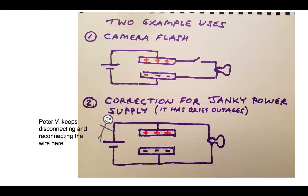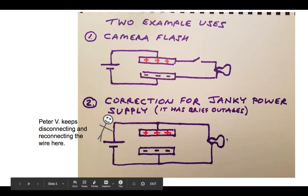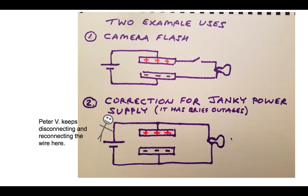The other example use would be if you had a really janky, really spotty power supply. To simulate that, I've got my student Peter here who is trying to troll us by connecting and disconnecting the wire over here. If we didn't do anything, this light bulb would be blinking on and off as Peter pulled the wire off and on, making and unmaking the connection here.